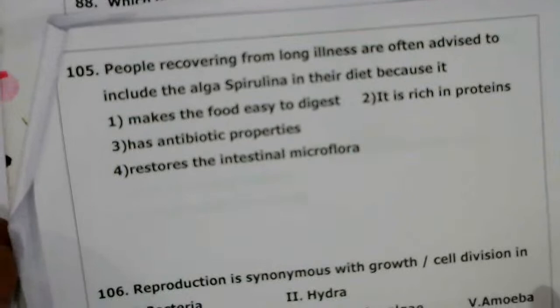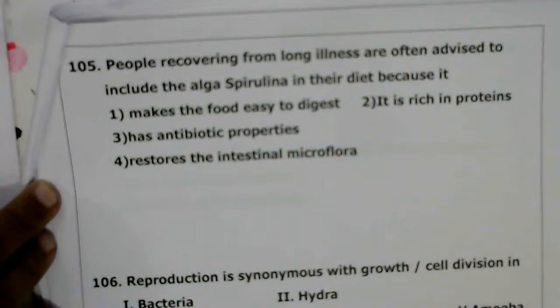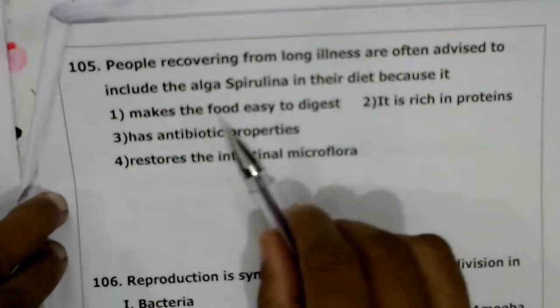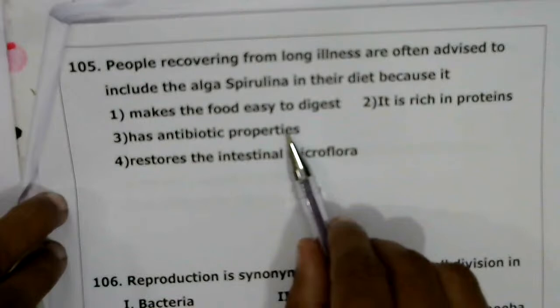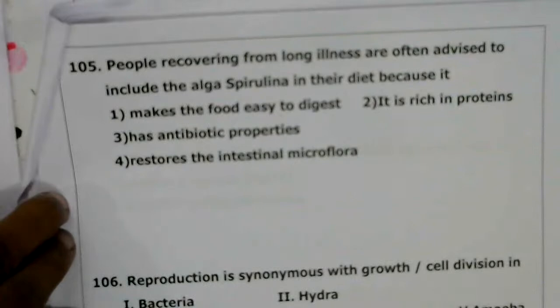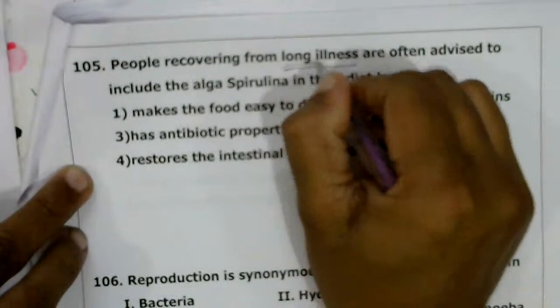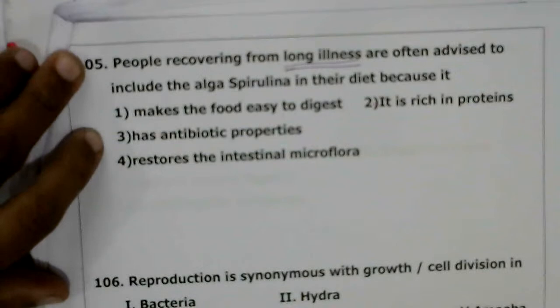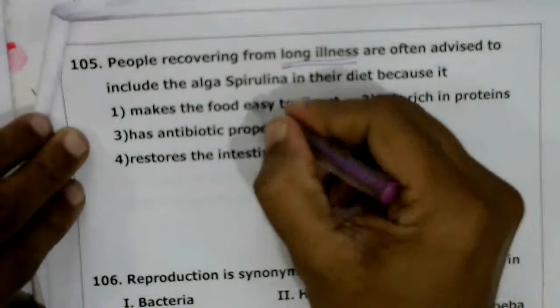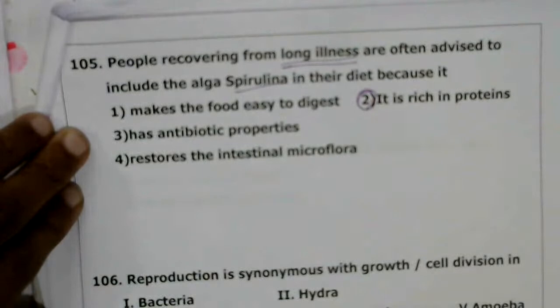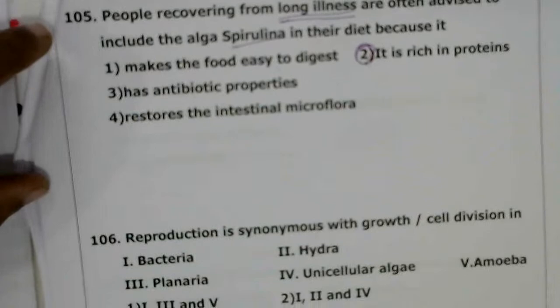Next question: people suffering from long illness are often advised to include the alga Spirulina in their diet. Among the options — makes food easy to digest, rich in proteins, has antibiotic properties, restores intestinal microflora — Spirulina is advised because it is a protein-rich source used to treat malnutrition. The correct answer is the second option.